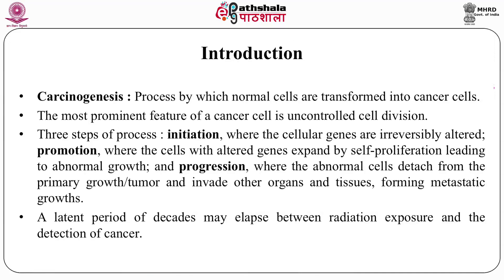Now, the basic question is: what is carcinogenesis? It is a process by which normal cells are transformed into cancer cells. The most prominent feature of a cancer cell is uncontrolled cell division. We know that body cells divide, but they have a controlling mechanism for division as well as differentiation. If that control mechanism is lost, cell division takes place in an uncontrolled fashion — this is one prominent feature of cancer cells.